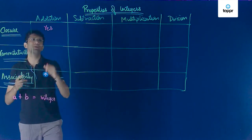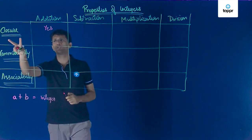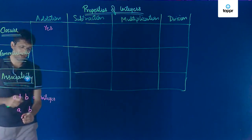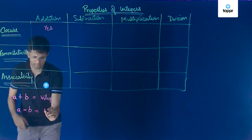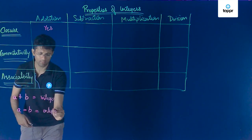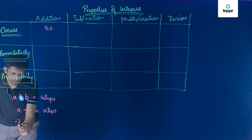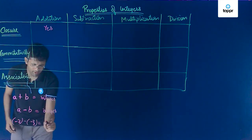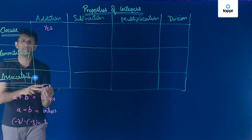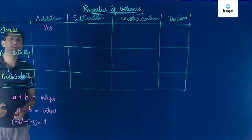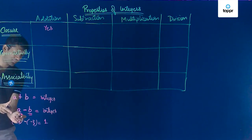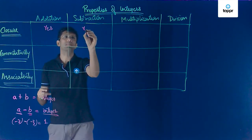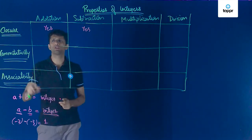Let us now come to subtraction and see if closure applies. If you have two integers a and b and you perform the subtraction of b from a, the result will always be an integer. For example, if a is −2 and b is −3, then a minus (−3) gives the result 1. So subtraction of integers also follows the closure property.